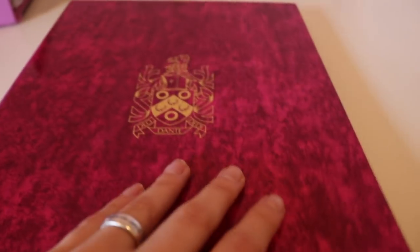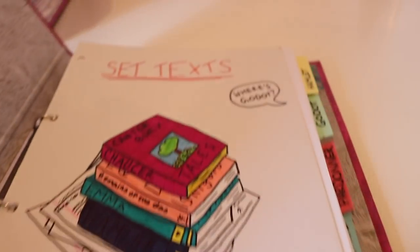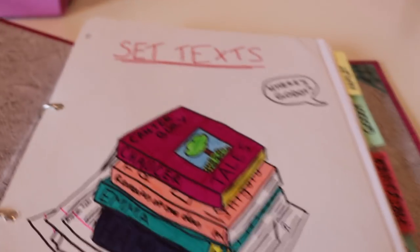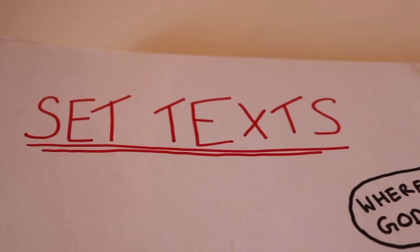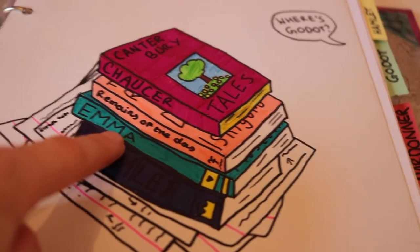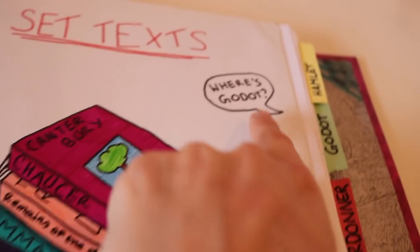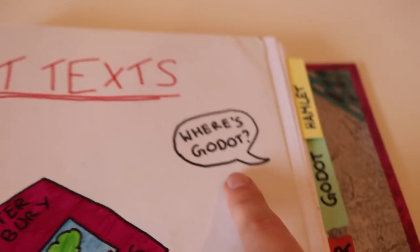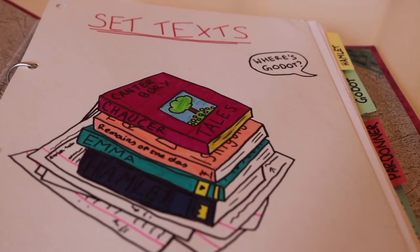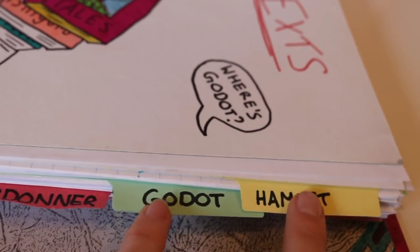This is like one of my favourite folders that I own. It actually has my school crest on it. This is my favourite drawing so I organised this one by the text that we did. This is my set text folder and we basically did that in second years. We did Hamlet, Remains of the Day, Chaucer and also a play which is Where's Godot.